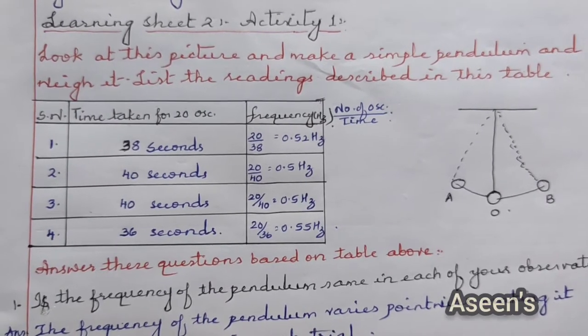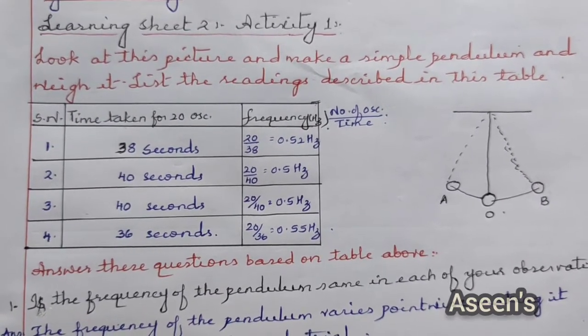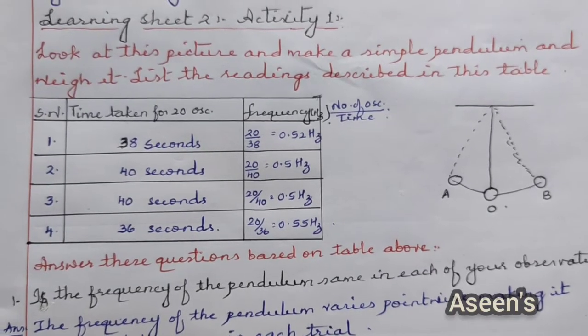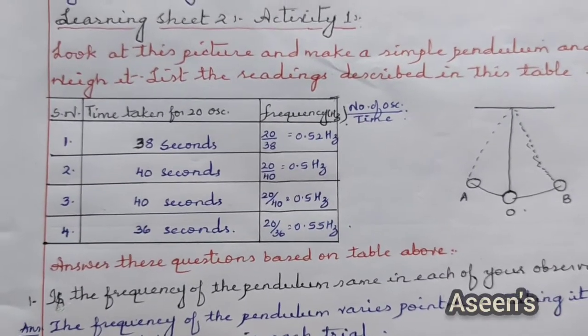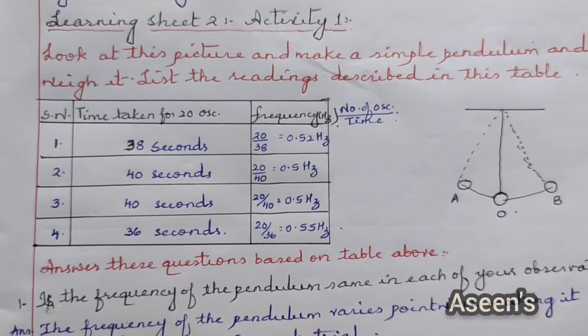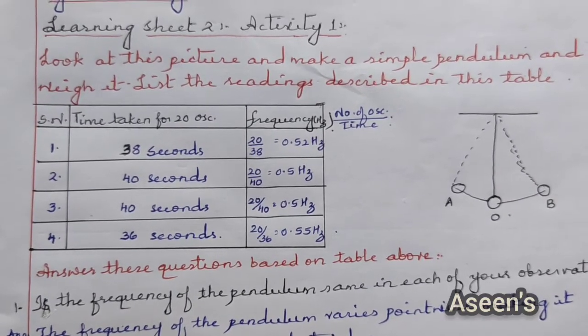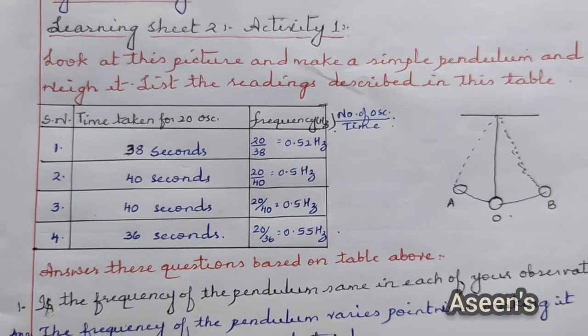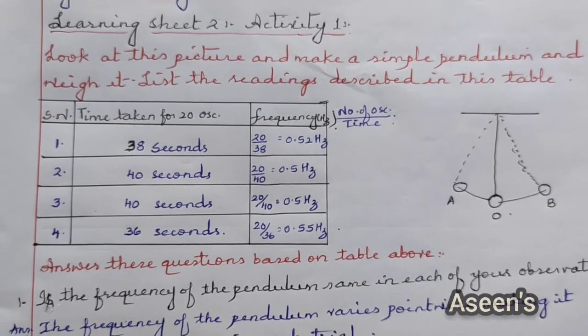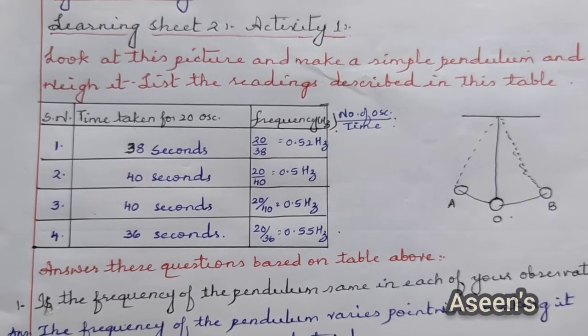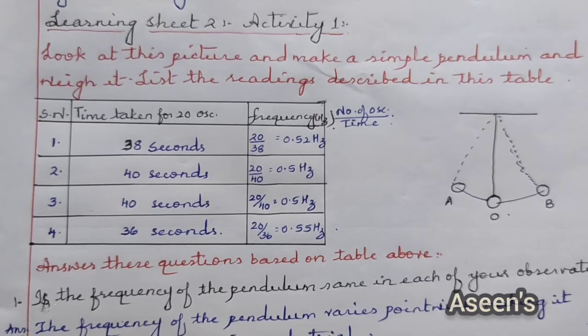The first one is time taken for 20 oscillations, while the second one is frequency, which is nothing but number of oscillations divided by time taken. According to my experiment, the readings are 38 seconds, 40 seconds, 40 seconds, and 36 seconds.